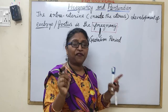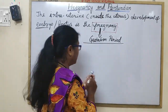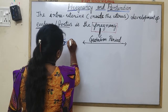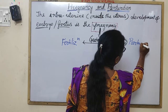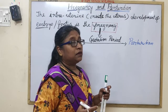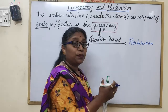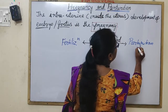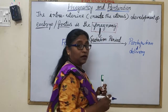The term 'period' refers to the time between two events. In the case of pregnancy, it starts from fertilization — the fusion of male and female gametes, or fertilization of the egg by the sperm, resulting in the intermingling of maternal and paternal chromosomes — and ends with parturition, which is the delivery of the fully grown fetus.